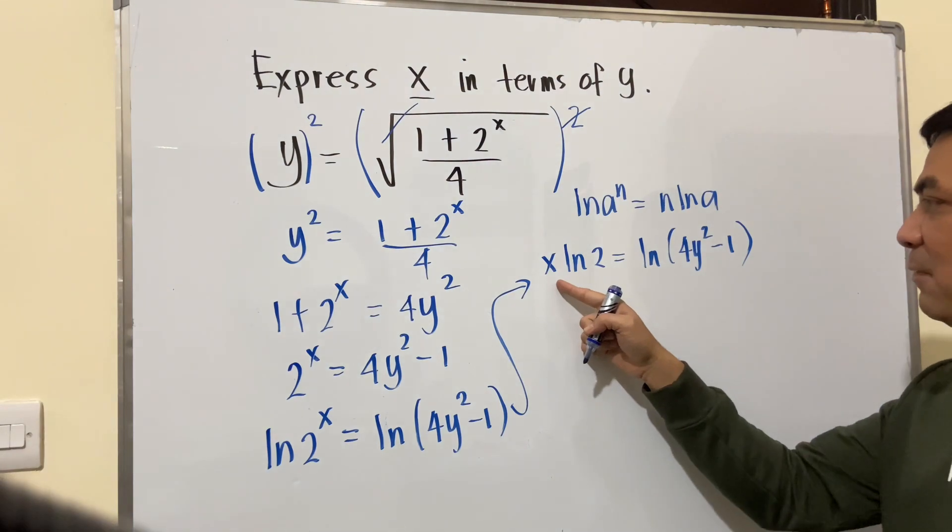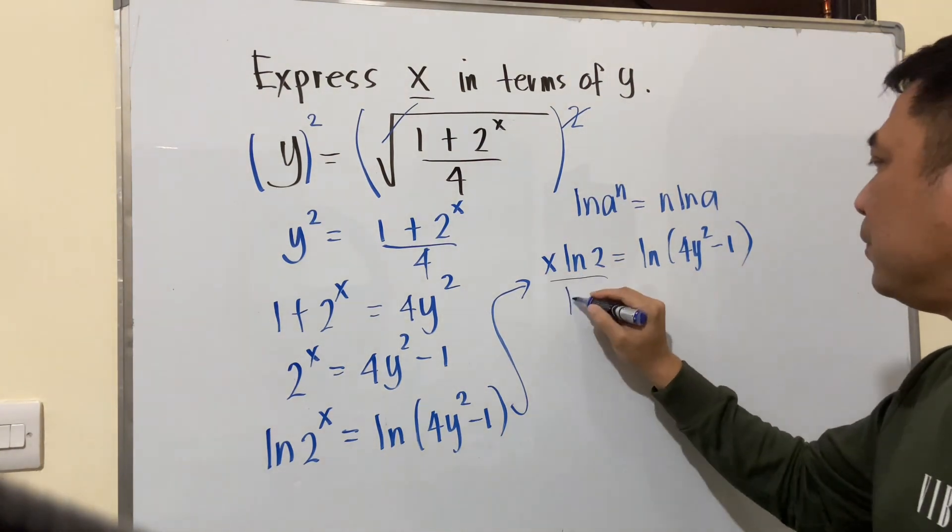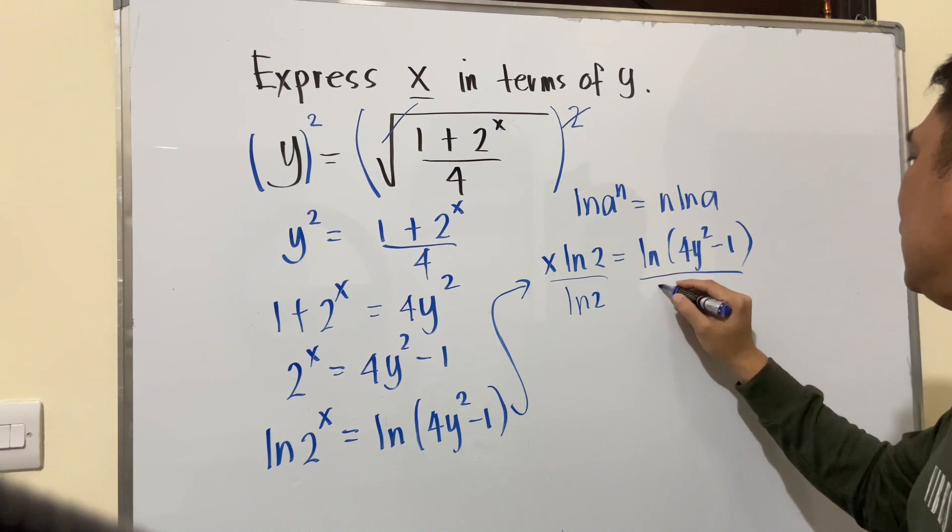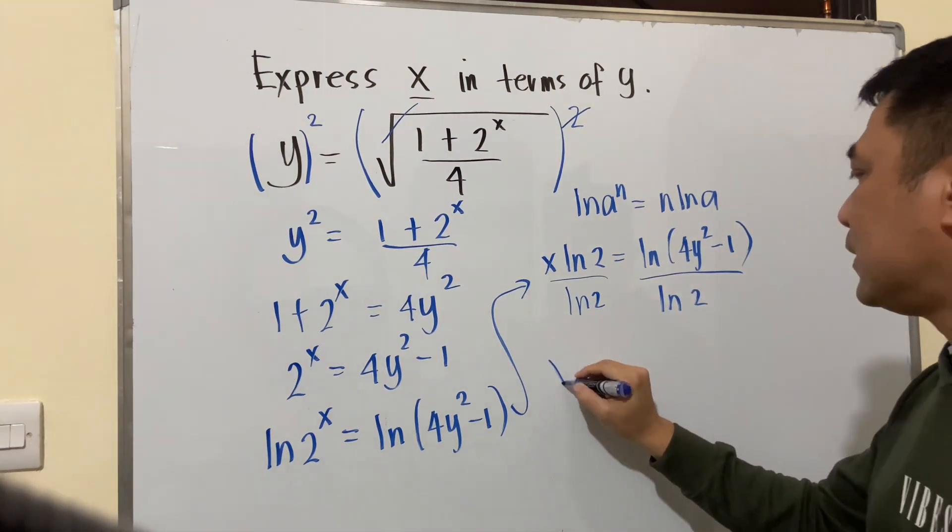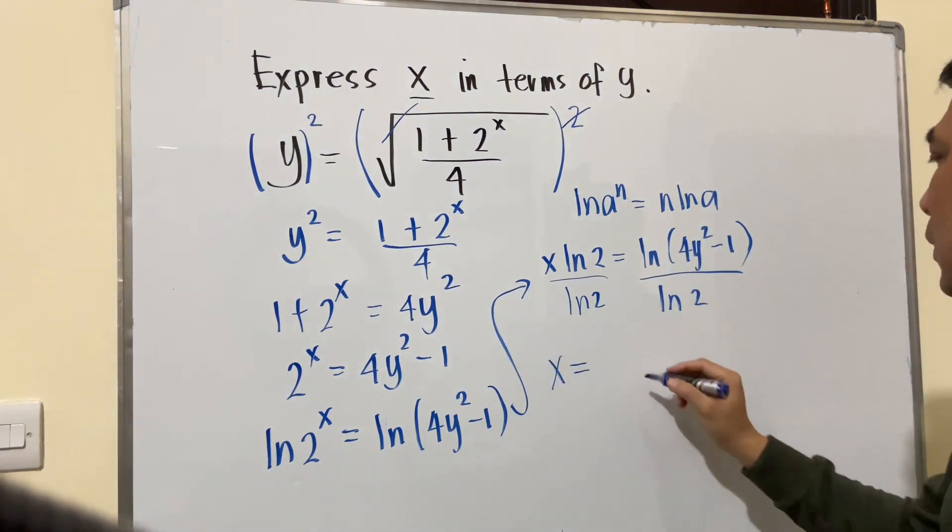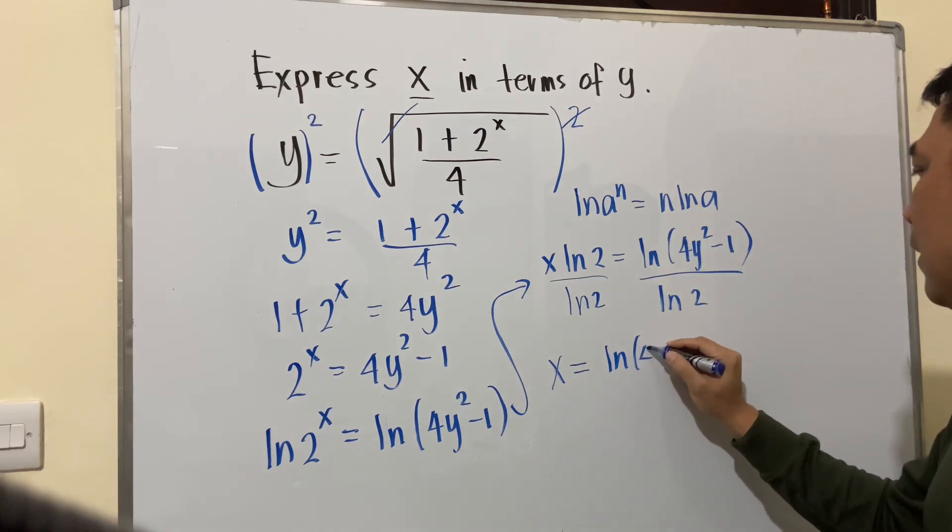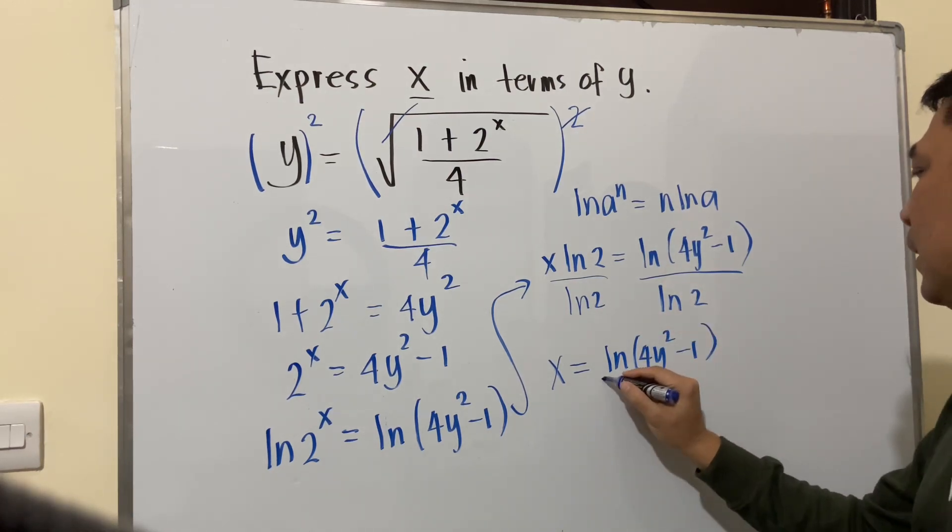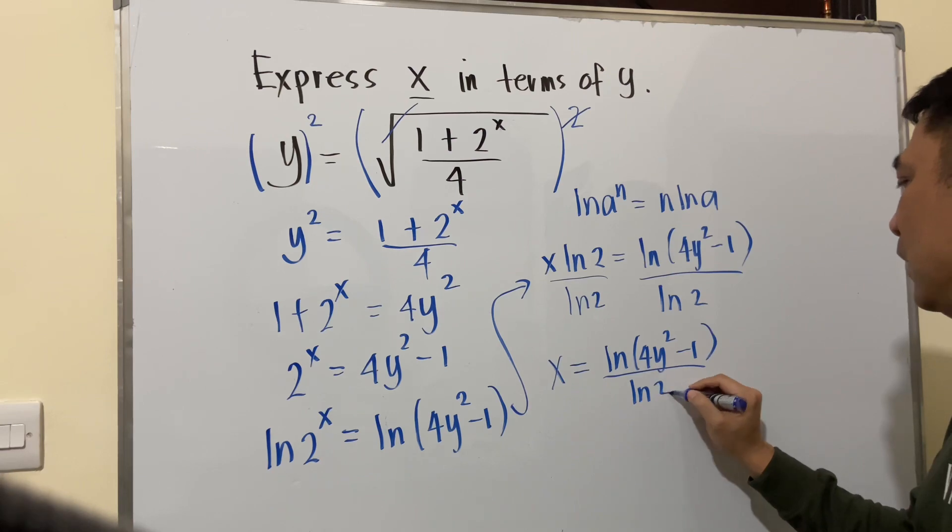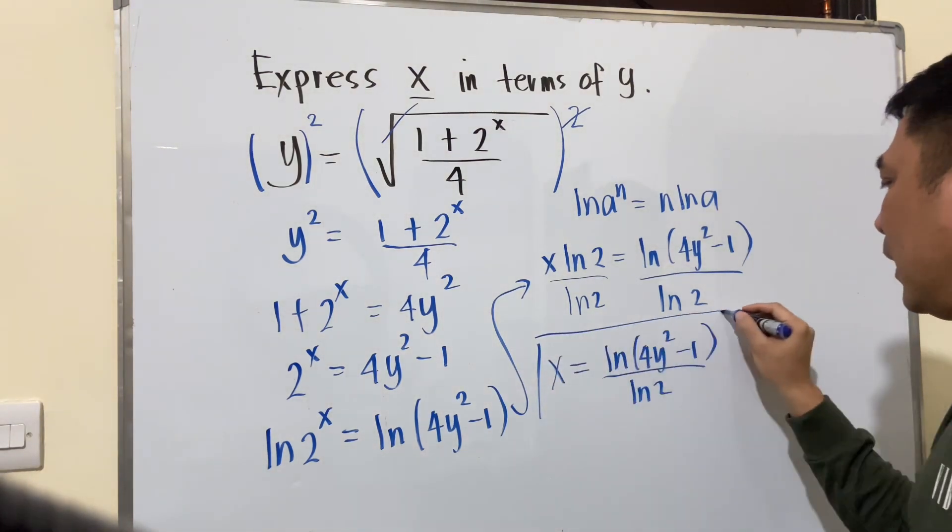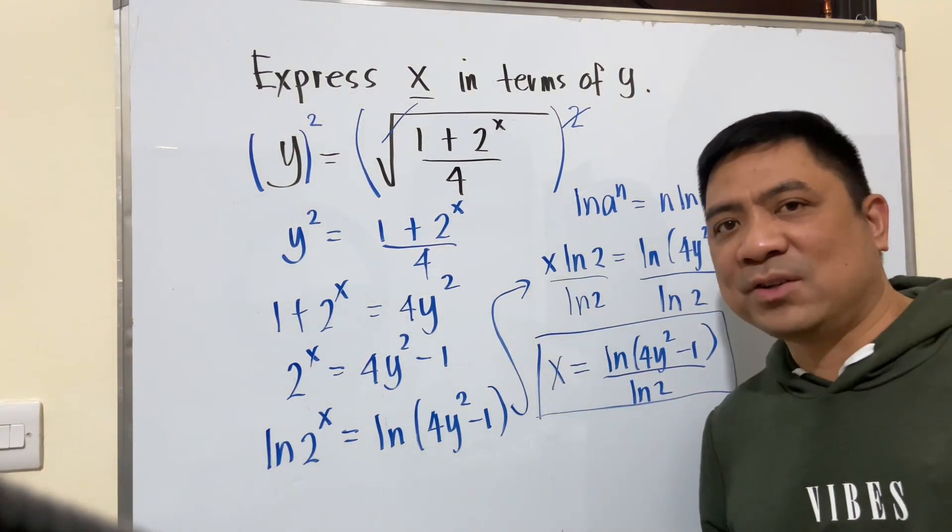Dividing both sides by ln 2, x therefore equals ln of 4y squared minus 1 divided by ln 2. So this is our final answer here.